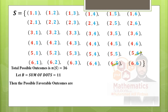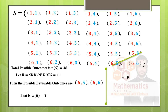For the sum equal to 11, checking the diagonal pattern in the sample space, the favorable outcomes are (5,6) and (6,5) — so N of B equals 2. Probability of B equals 2 over 36, or 1 over 18. That is the second probability.